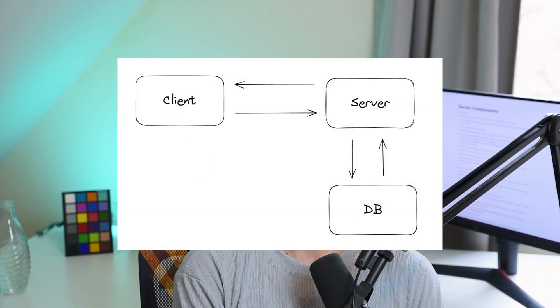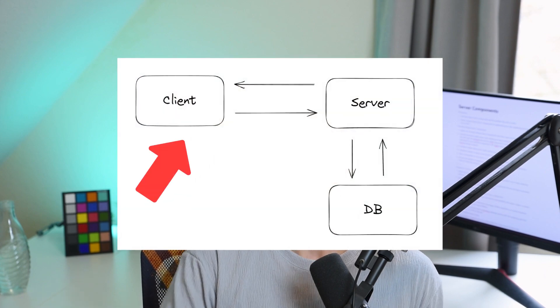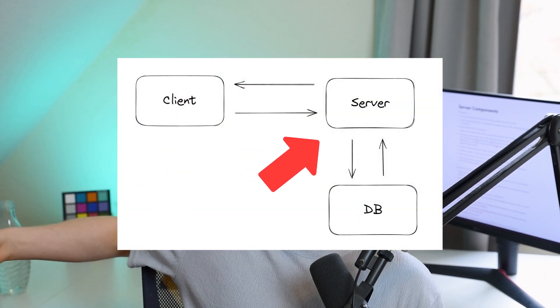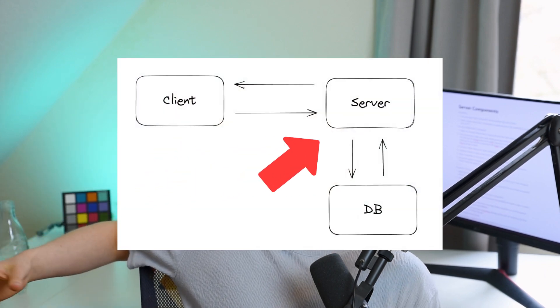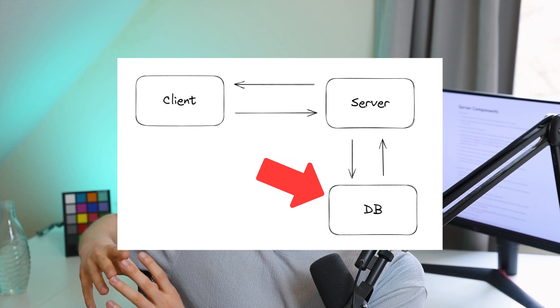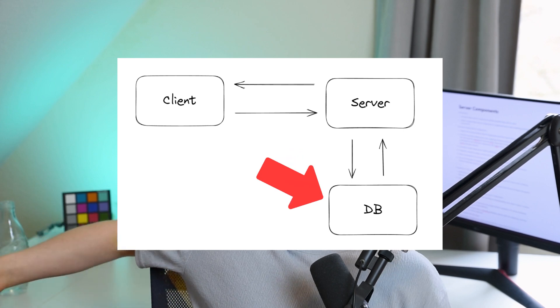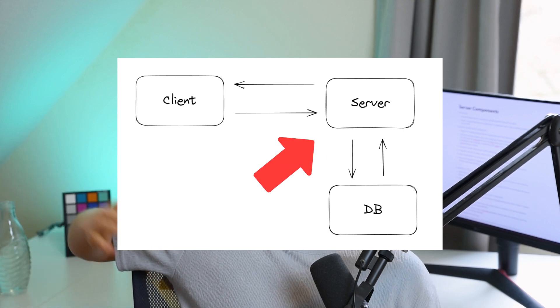The way you do that in client components is have a fetch request on the client side that makes a request to an API route you defined, in which you make the database query and then return the data. So that has been thoroughly simplified with the server component architecture.